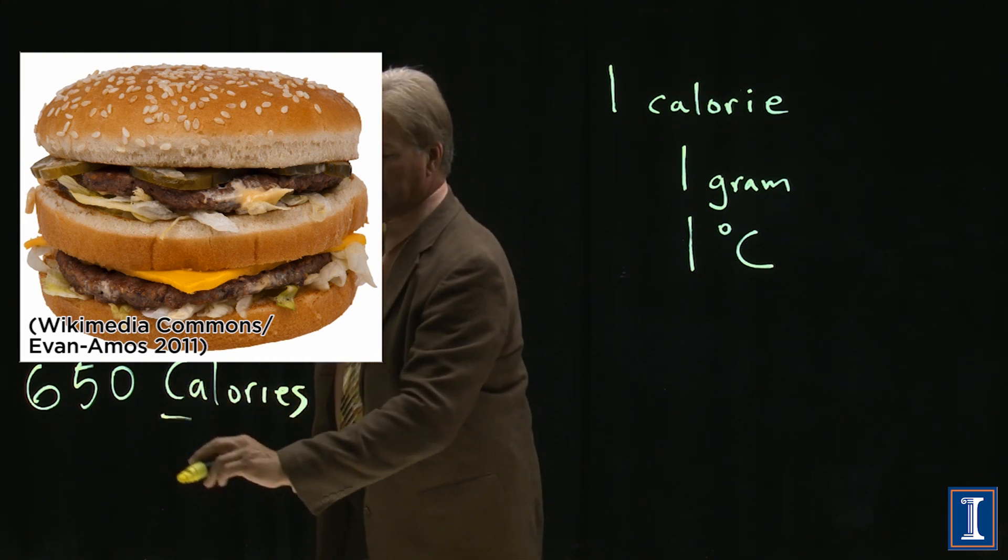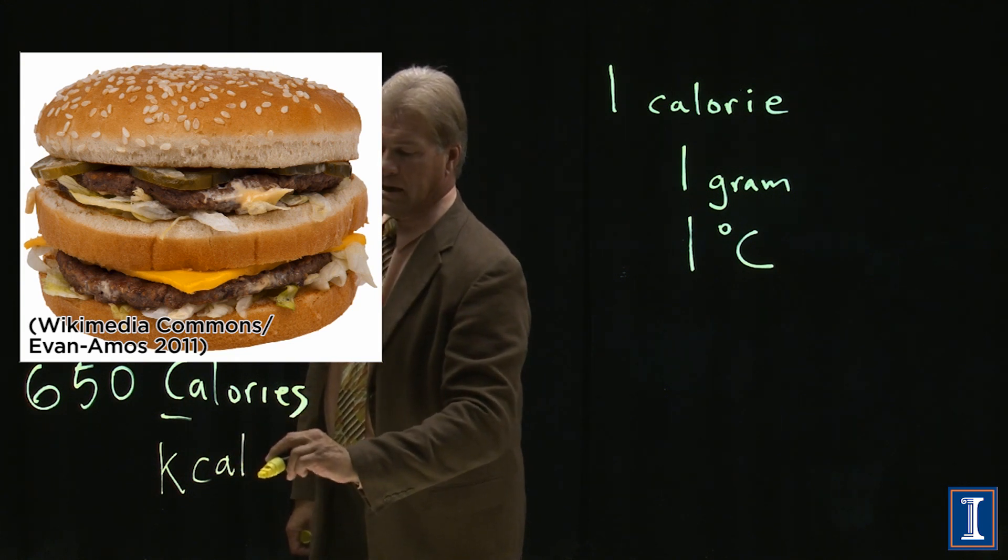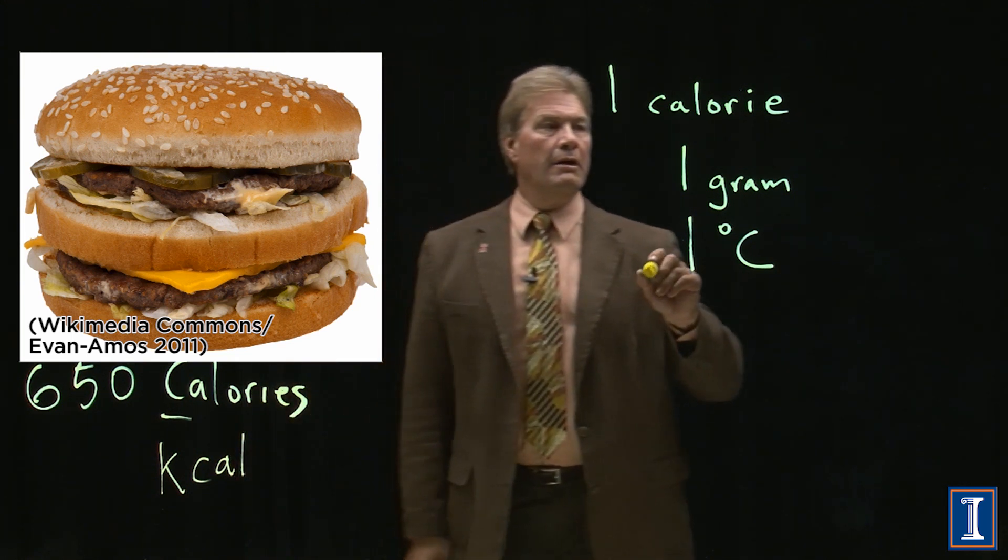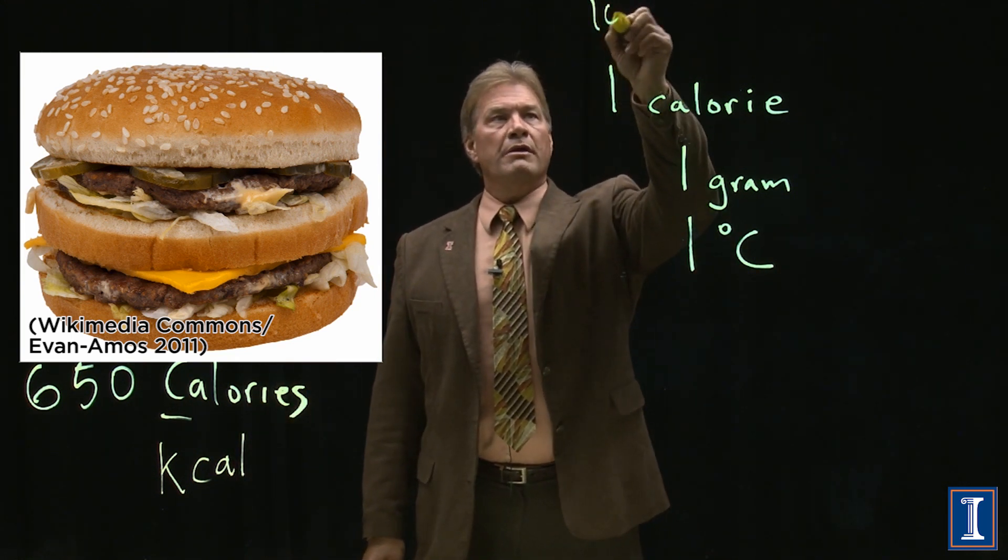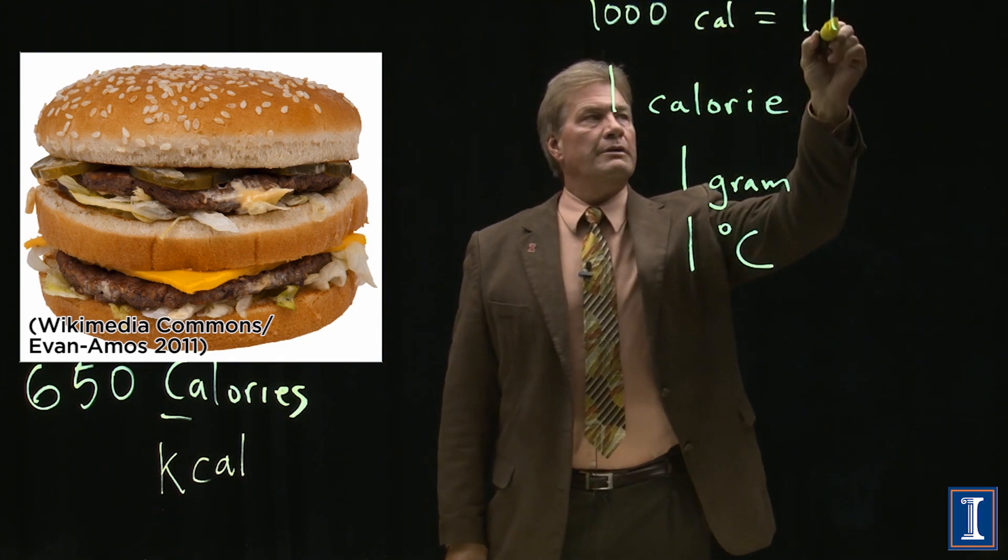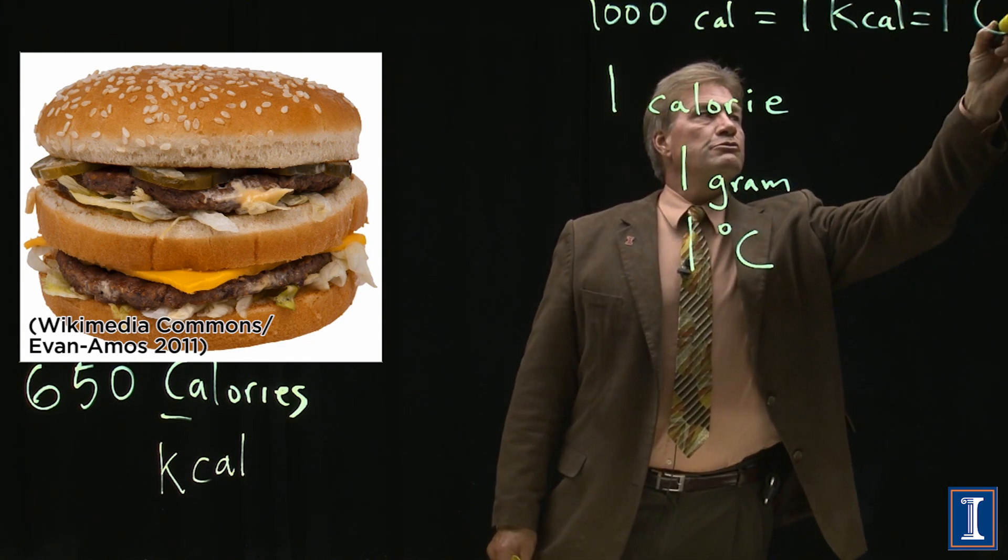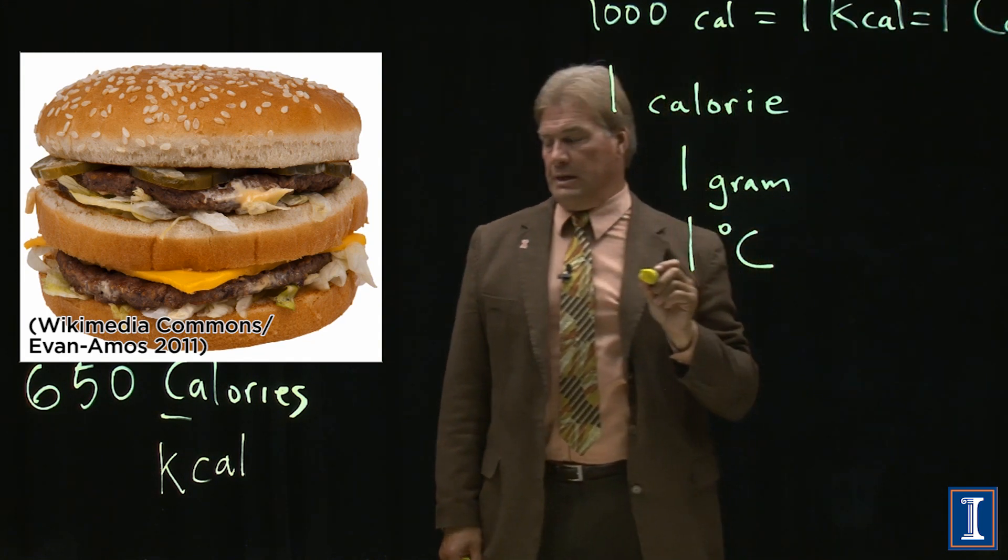This is a calorie with a capital C. It really stands for a thousand calories, a kilocalorie. So one thousand calories is equal to one kilocalorie, which is equal to one food calorie with a capital C.